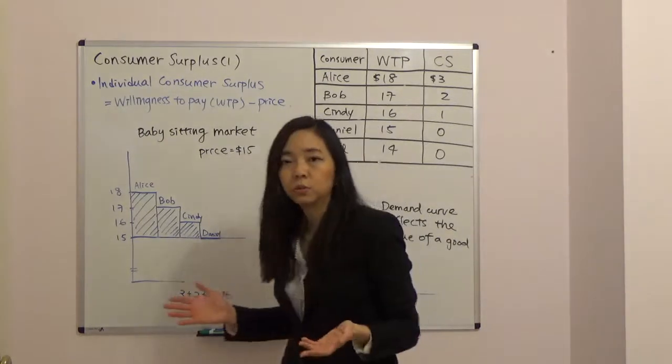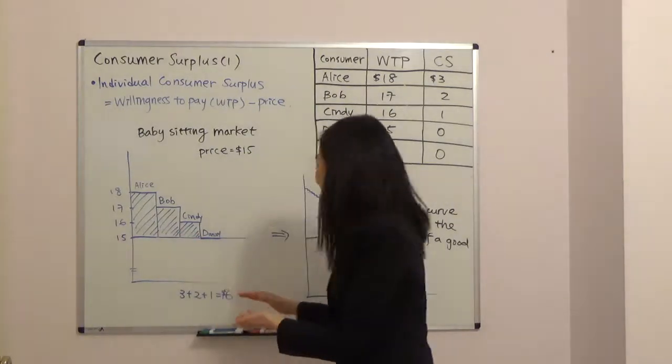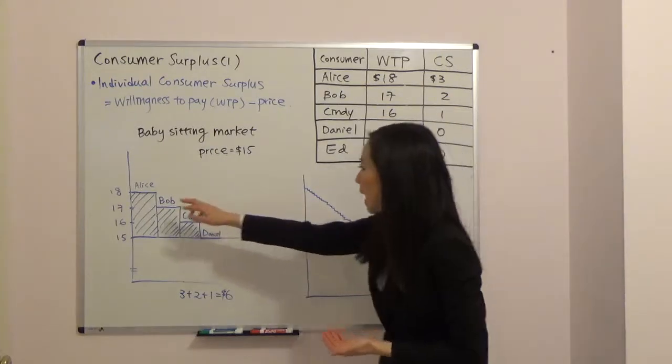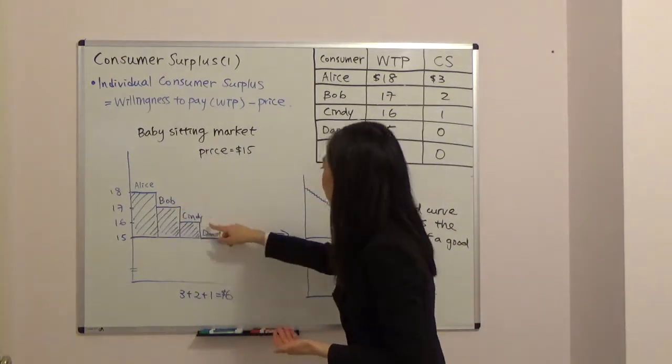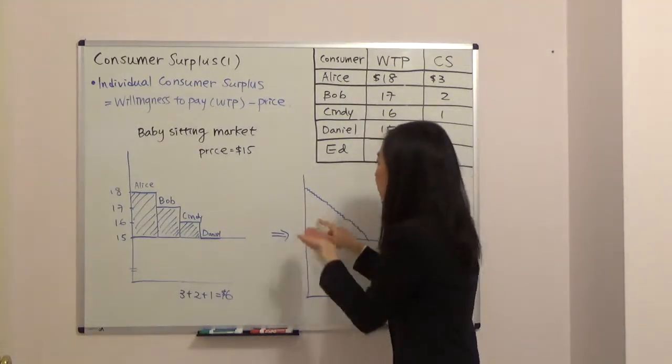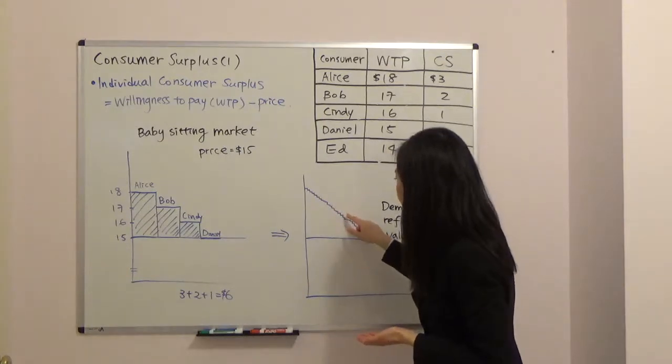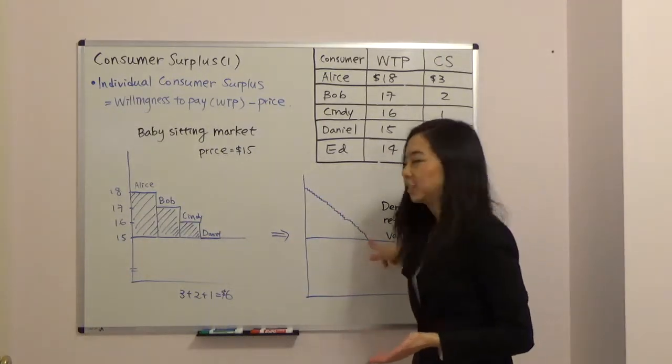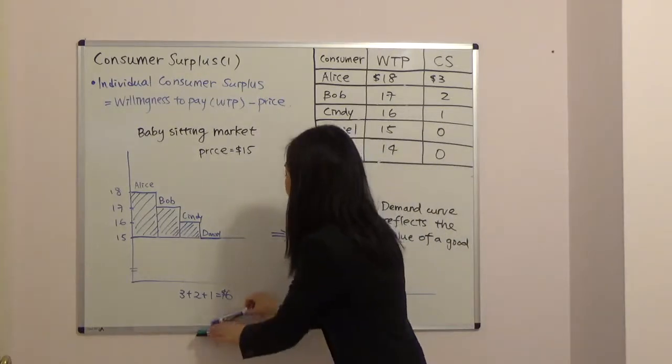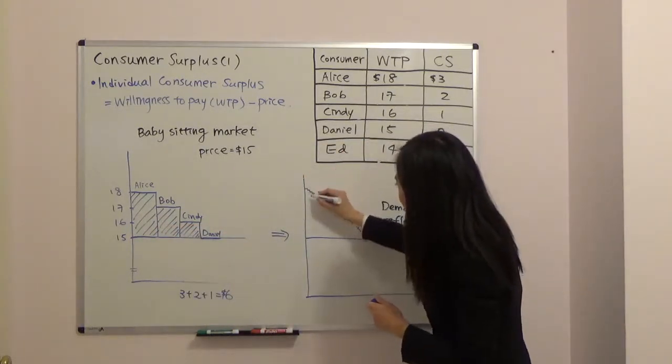What about in the real world? Well, we know in the real world there are more than just four consumers in the market. There are a lot of consumers in the market. And therefore your step for Alice, Bob and Cindy is going to become really, really tiny because we have many consumers. And each of them will have a different willingness to pay. So this tiny, tiny step like that. So what is the total consumer surplus? Instead of this blue shaded area, it will be like this area.